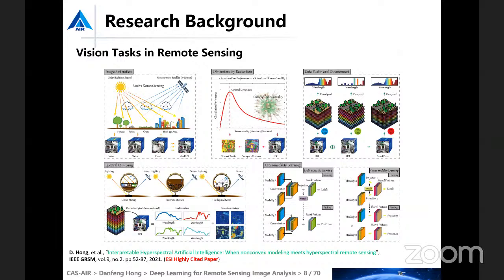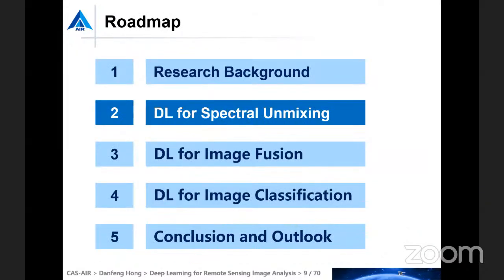In remote sensing image analysis, there are several potential vision tasks, such as image restoration, dimensionality reduction, data fusion and enhancement, spectral unmixing, and image classification. In this talk, we will unfold three topics: spectral mixing, image fusion, and image classification using deep learning techniques. We now go to the second part: deep learning for spectral mixing.